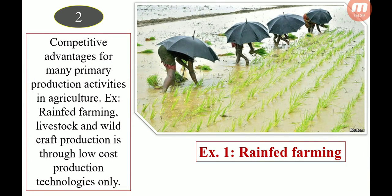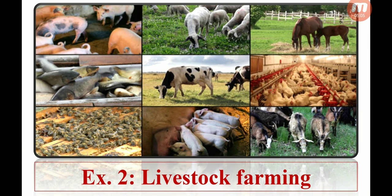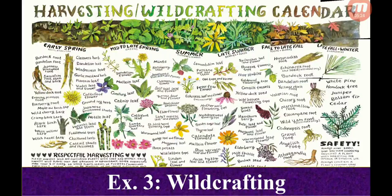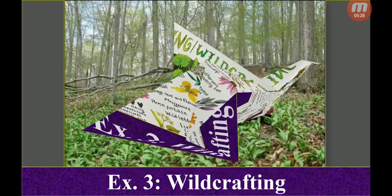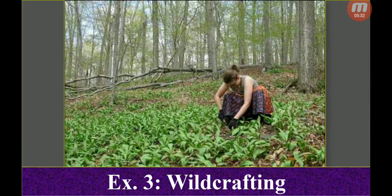The second need is the competitive advantage for many primary production activities in agriculture. For example, rain-fed farming, livestock, and wild-craft production use low-cost production technologies. We can adopt rain-fed farming, livestock farming including goatry, cows and dairy, and poultry. We can also practice wild-crafting by collecting products from forest areas. These are all examples of low-cost competitive agricultural activities.